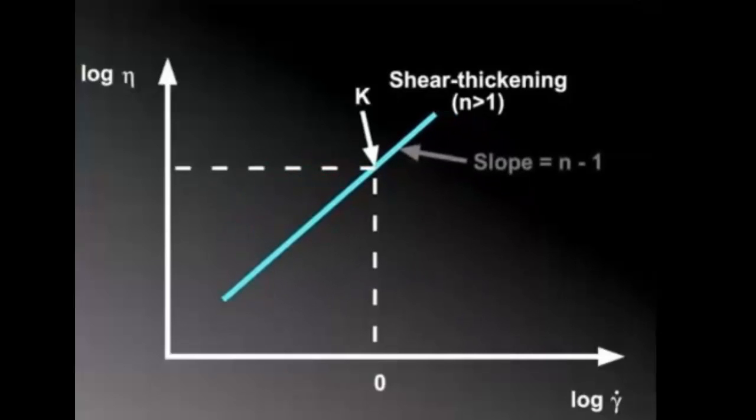The slope of the line is still equal to n minus 1, and the value of k is also the viscosity when the log of the shear rate is equal to 0.